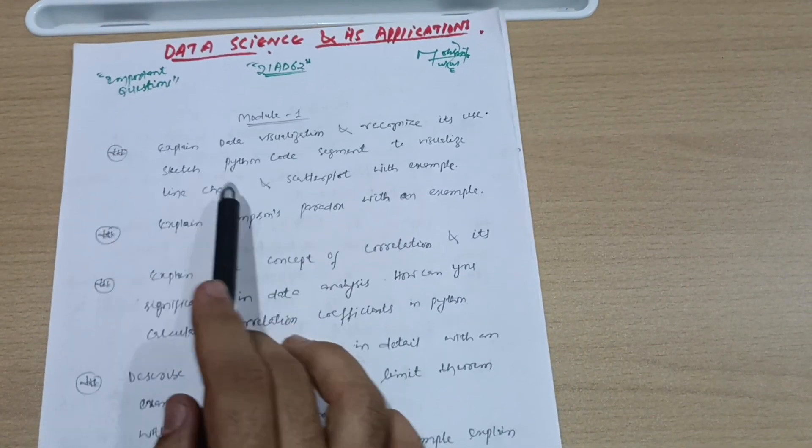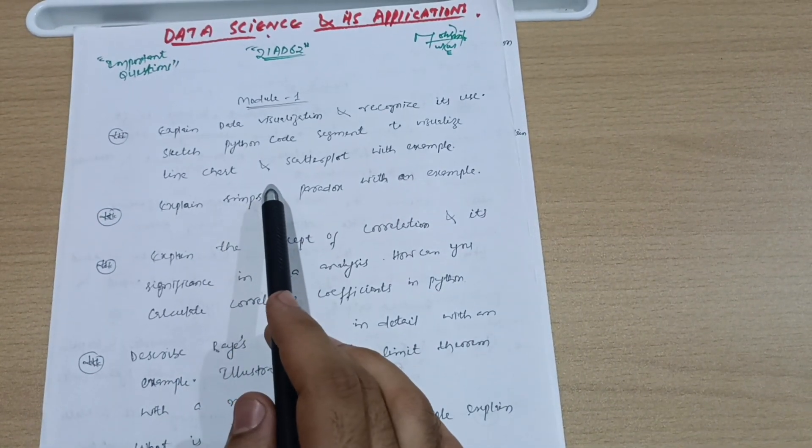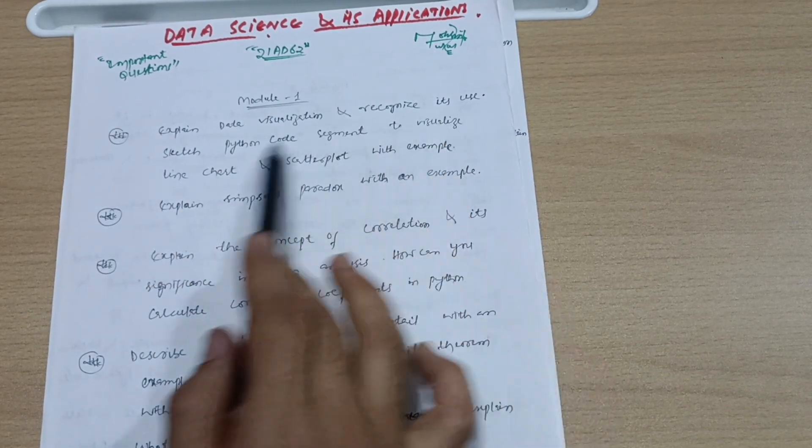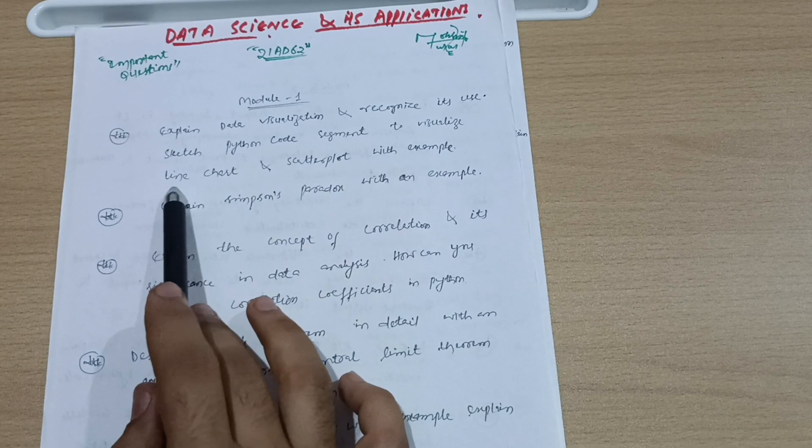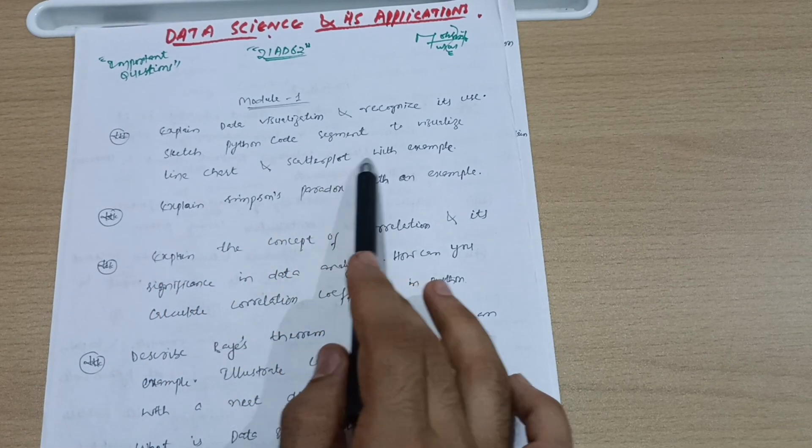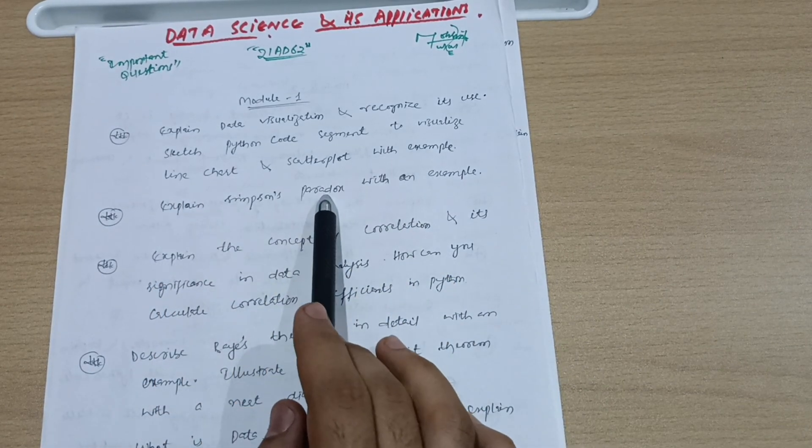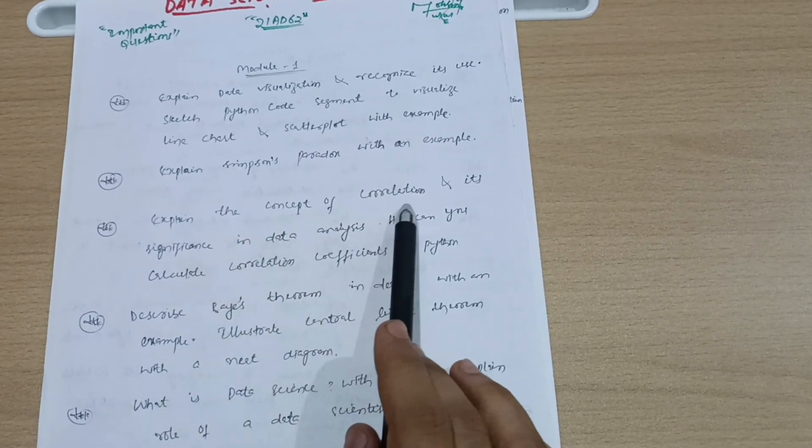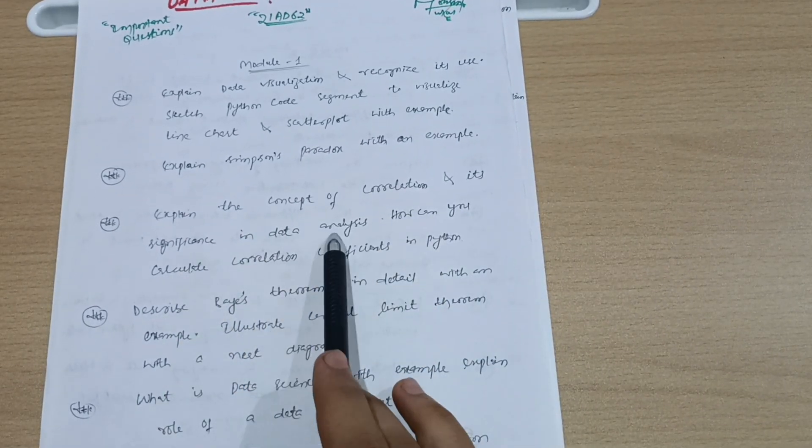Module 1: I have taken seven questions. Expand data visualization and recognize its use. Sketch Python code segment to visualize line chart and scatter plot with example. Expand Simpson's paradox with an example—this is a repeated question. Next, explain the concept of correlation and its significance in data analysis.